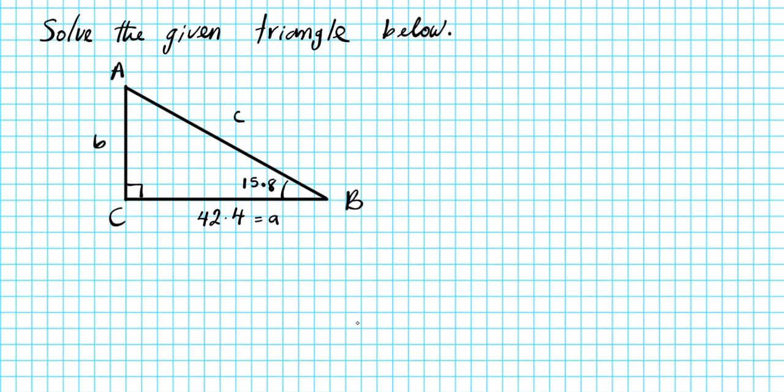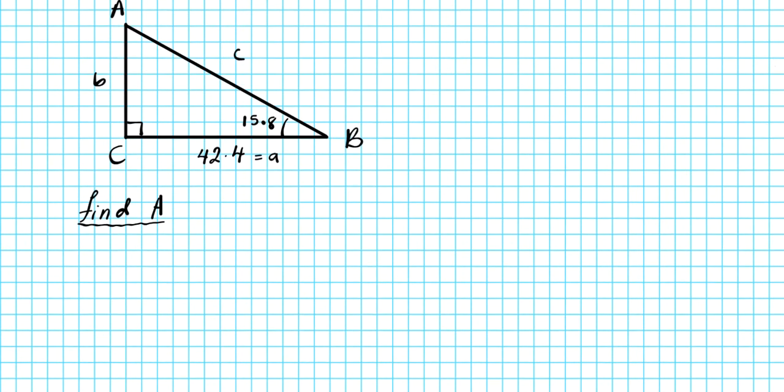The first missing variable that we're going to find is big A. So we need to find angle A. Now in order to find angle A, we're going to use the triangle angle sum theorem. If you have two angles in a right triangle, it's easy to find what the third angle is.